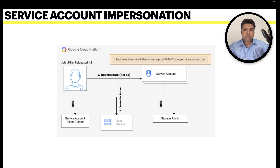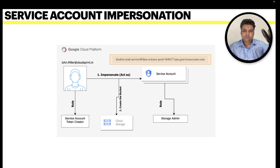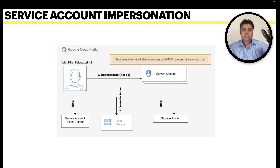Suppose John Miller is a user and John does not have permissions to create cloud storage. We have a service account called 'bucket-read-service' which has the Storage Admin role. John only needs a role called Service Account Token Creator. Once John has this role, he can impersonate the bucket-read-service account and create a bucket on its behalf. A short-lived token will be generated, do the job, and close the session — all without generating a key.